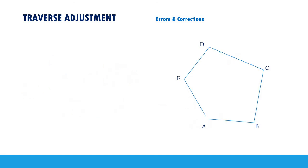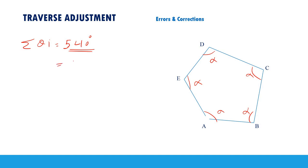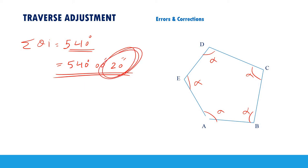For the angular error: in this case we have five angles, and in theory the sum of interior angles of a five-sided traverse should be 540 degrees. But the actual sum of your measured angles might be, for example, 540 degrees 0 minutes and 20 seconds. That means you have an error of 20 seconds which needs to be distributed. These errors and corrections for both distances — in terms of departures and latitudes — and for the angles will be explained in detail in a separate video on traverse adjustment calculations.